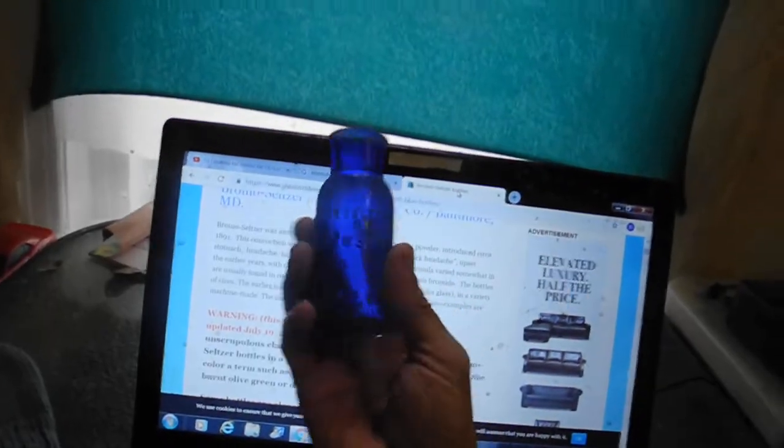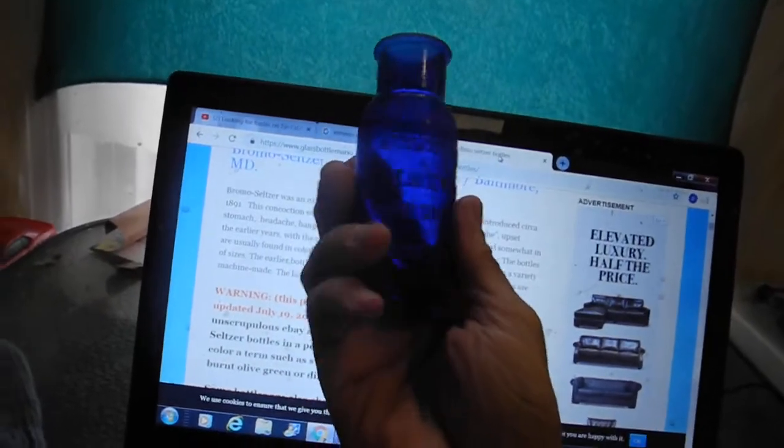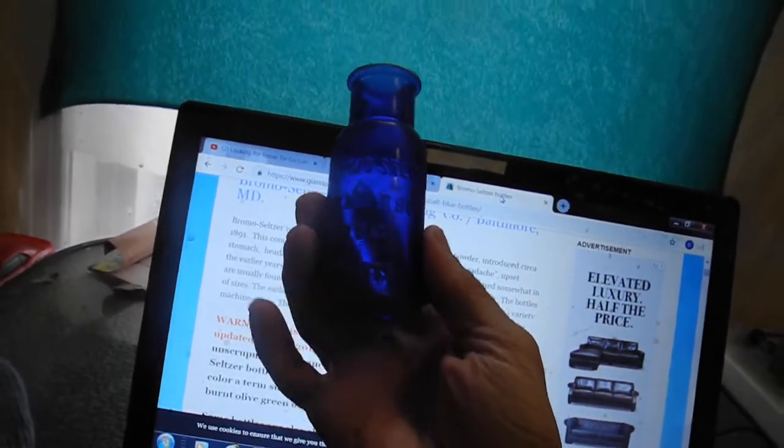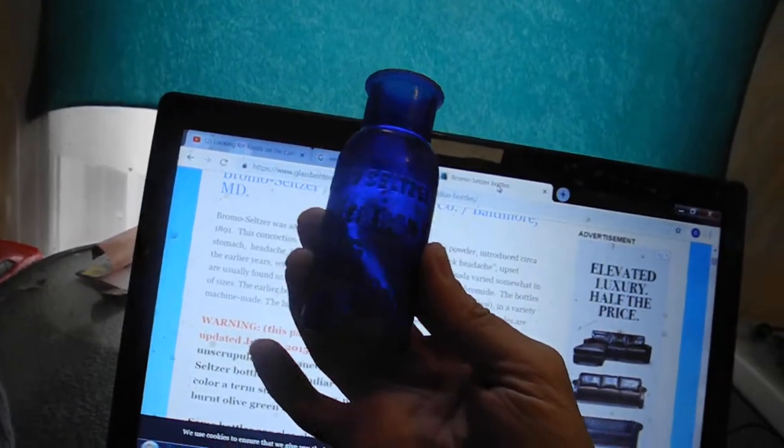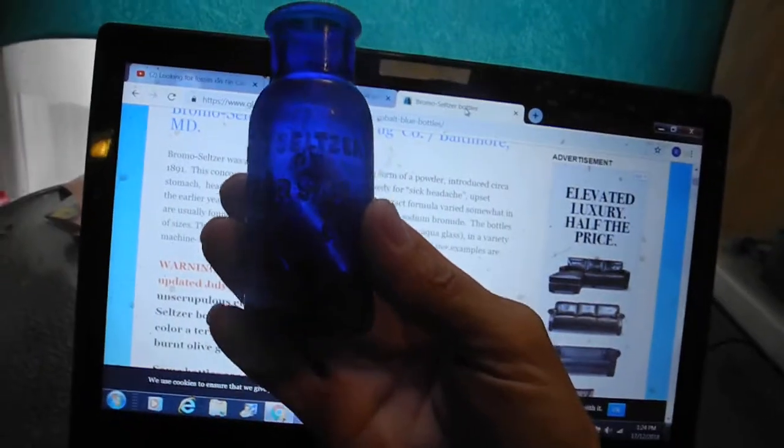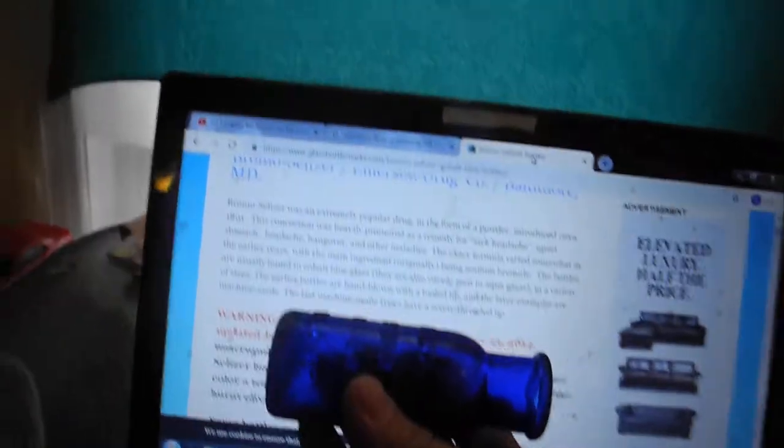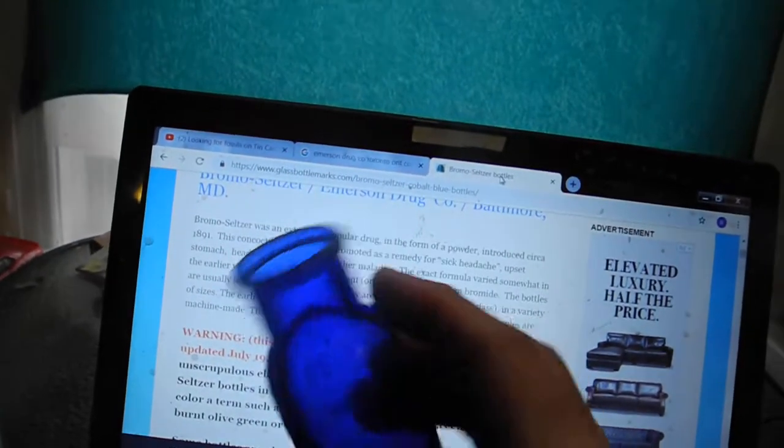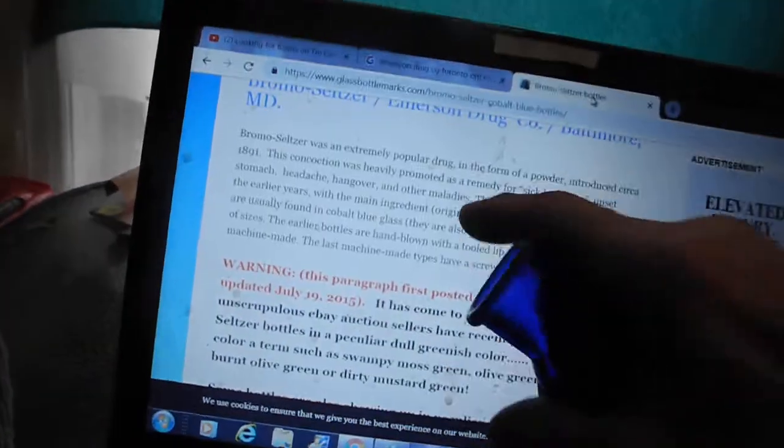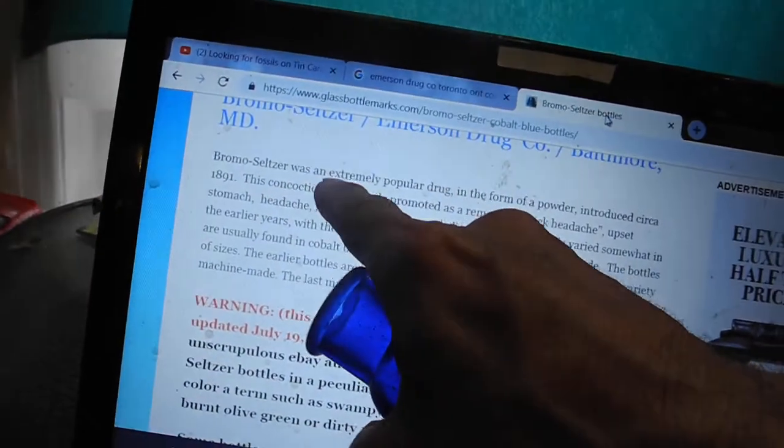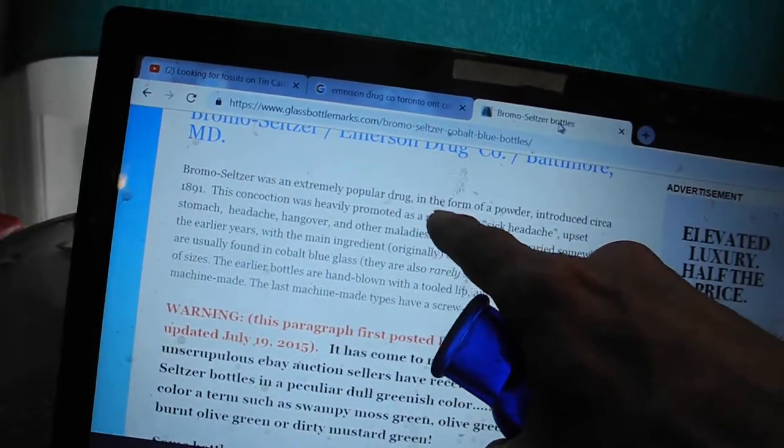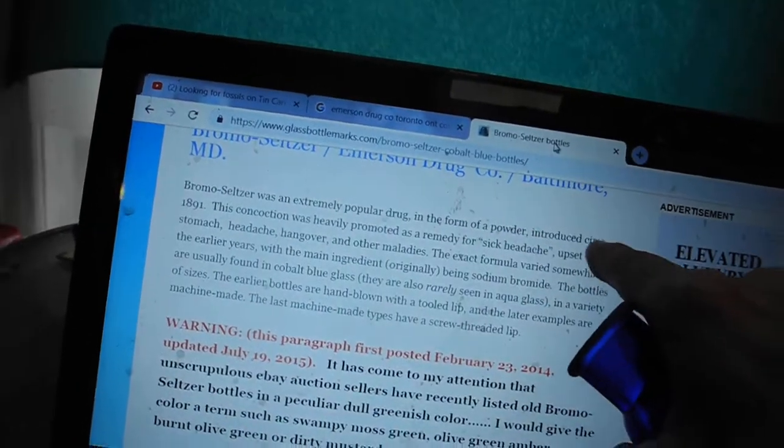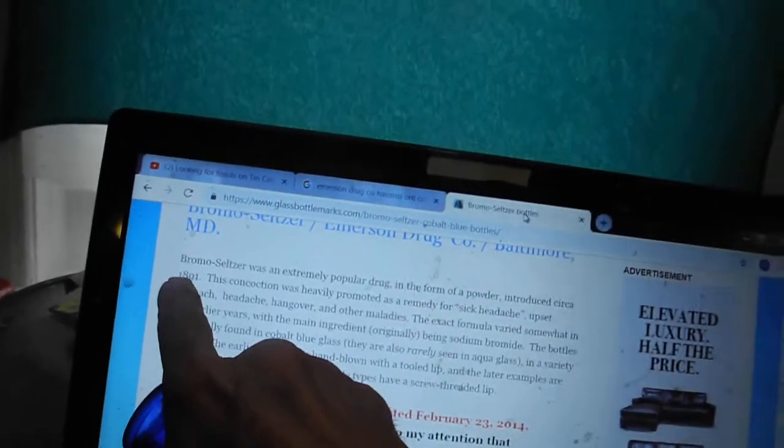Here is the Bromo Seltzer Emerson Drug Company Toronto Ontario Blue Cobalt Bottle. Bromo Seltzer was an extremely popular drug in the form of a powder introduced circa 1891.